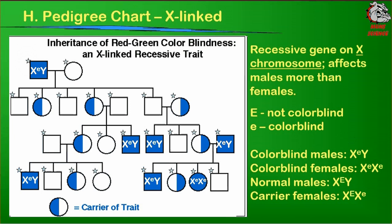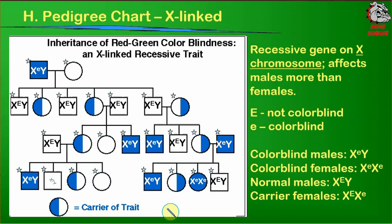After you have all the colorblind or affected people identified with their genotypes, you can look at the normals. Normal males are easiest to find because if you're a male with normal vision, you must have an X chromosome with a dominant trait and a Y. So all males with normal vision have to be X big E, Y. There are four in the second generation, two in the third generation, and two more in the fourth generation — all X big E, Y. All the carriers are females, and any carrier has to be a combination of big E and little e on the X chromosomes, so all carrier females are X big E, X little e.